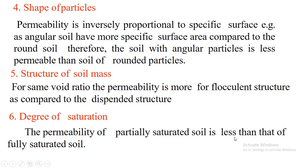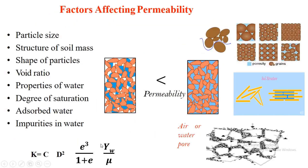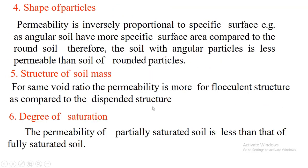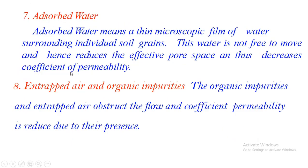Degree of saturation: permeability of partially saturated soil is less than that of fully saturated soil. In partially saturated soil, air voids are present, and water must work around these air voids to form a regular channel — so it takes much more time. In a fully saturated condition, all voids are already forming a flow path, so water easily passes through, giving fully saturated soil higher permeability.